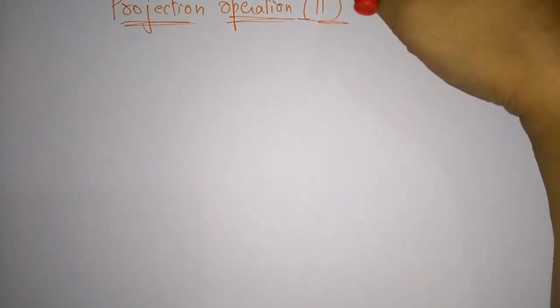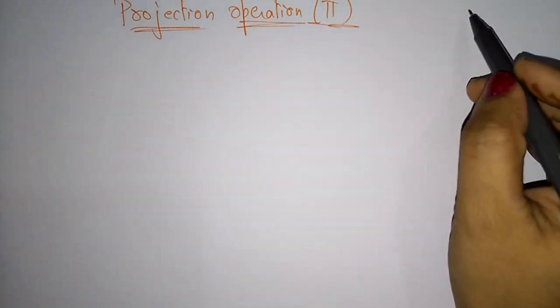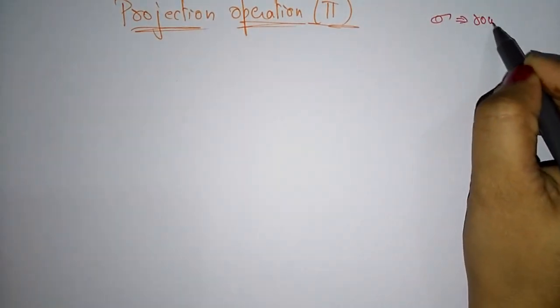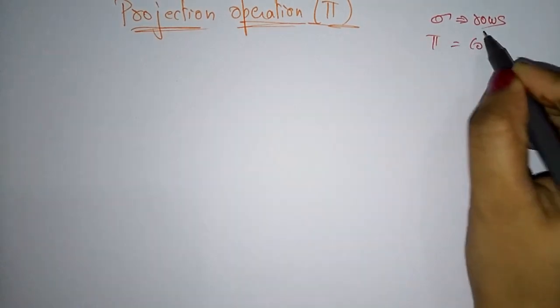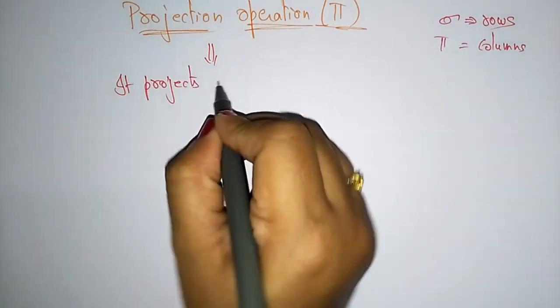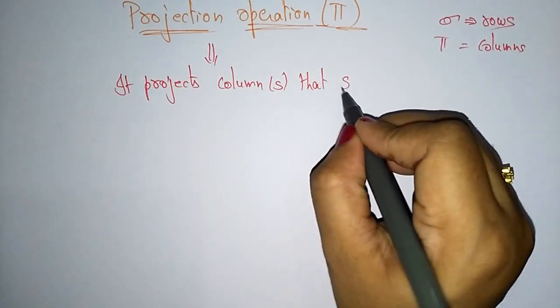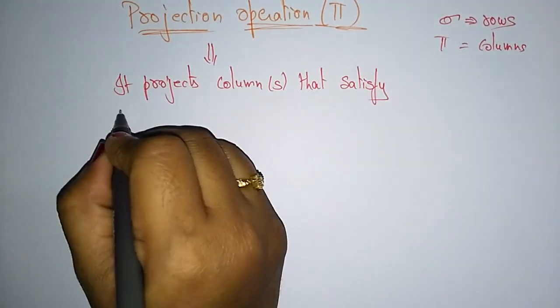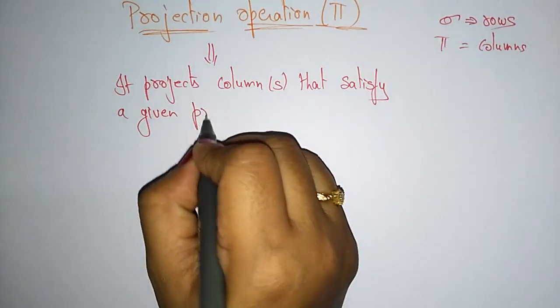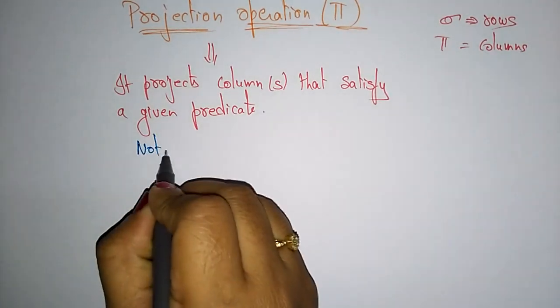Let us continue with relational algebra. In the previous video I explained the select operator. Now let us see the projection operator. Whereas select uses sigma to select only the rows, pi is used to select the columns. This projection operator pi projects columns that satisfy a given predicate.